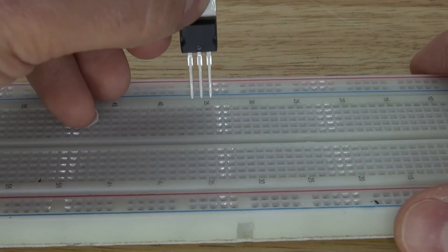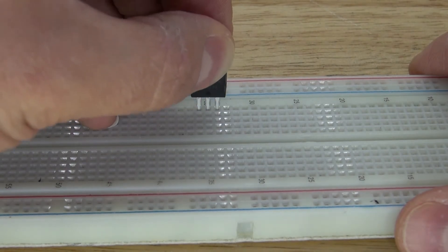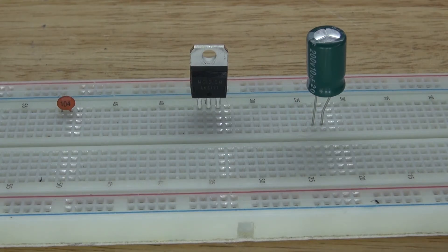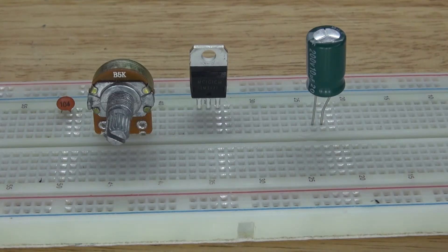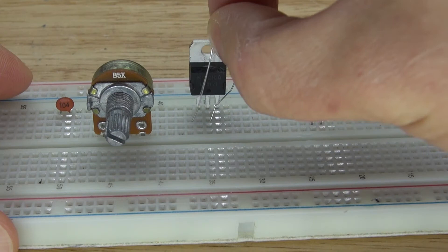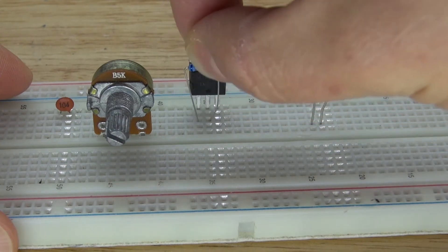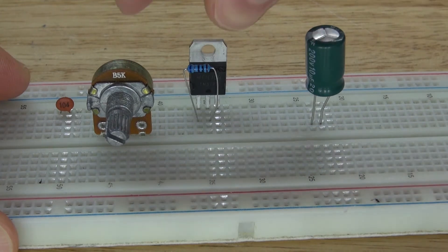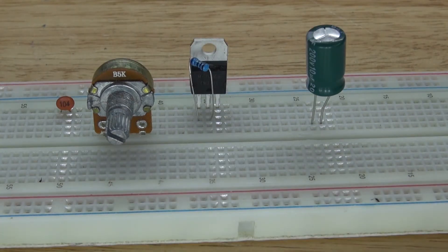First, I'm going to start with the breadboard and place the LM317 just like this. The 104 nanofarad, the 10 microfarad, and the 5k ohm potentiometer, and then the 680 ohm resistor placed on the adjust pin and output pin. And there we go, it should look just like this.